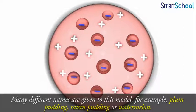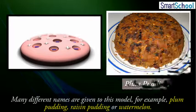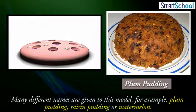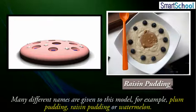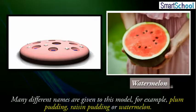Many different names are given to this model. For example, Plum Pudding, Raisin Pudding, or Watermelon.